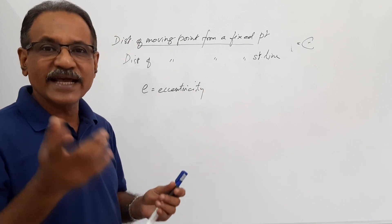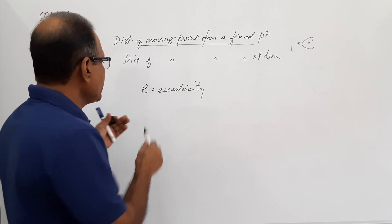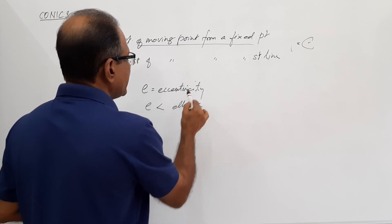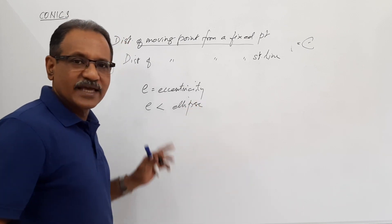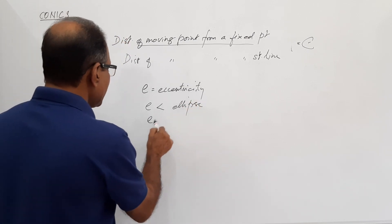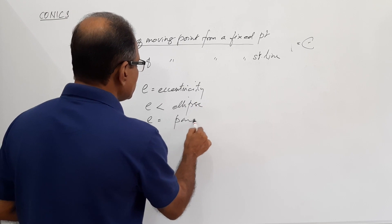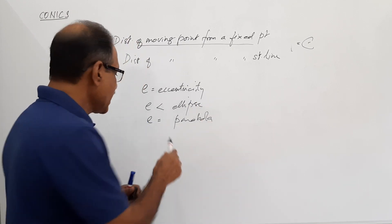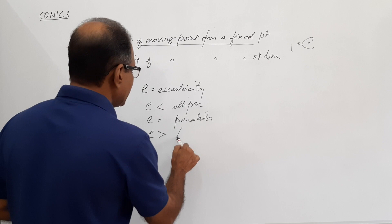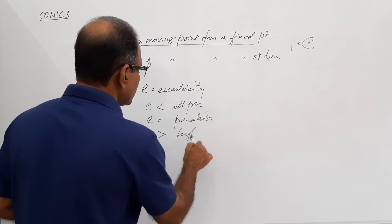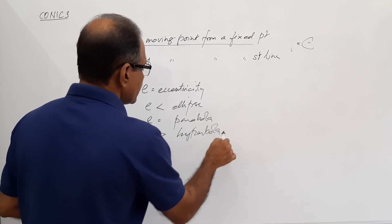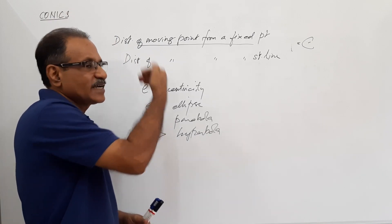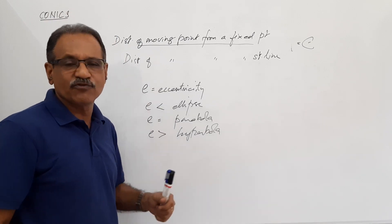This constant is called eccentricity. If e is less than 1, the curve which you get is called an ellipse. If e is equal to 1, the curve which you get is called a parabola. And if e is greater than 1, it is called a hyperbola.